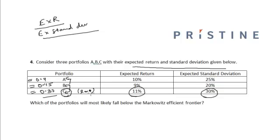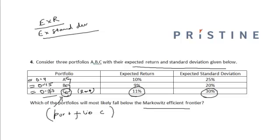Hence, if any portfolio falls below the Markowitz efficient frontier, it has to be Portfolio C, because it has the lowest ratio of expected return to expected standard deviation — 0.37 — which is lower than 0.45 for Portfolio B and 0.4 for Portfolio A. Therefore, Portfolio C will most likely fall below the Markowitz efficient frontier, given that only one of the three portfolios falls below it.